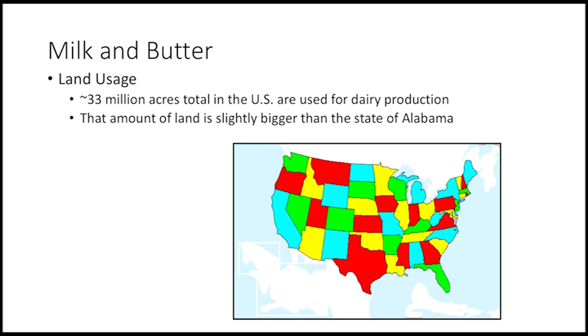Milk, for drinking or for things like butter, cheese, yogurt, and ice cream, uses a lot of land. 33 million acres of U.S. land are used for dairy production. That's slightly bigger than the state of Alabama.